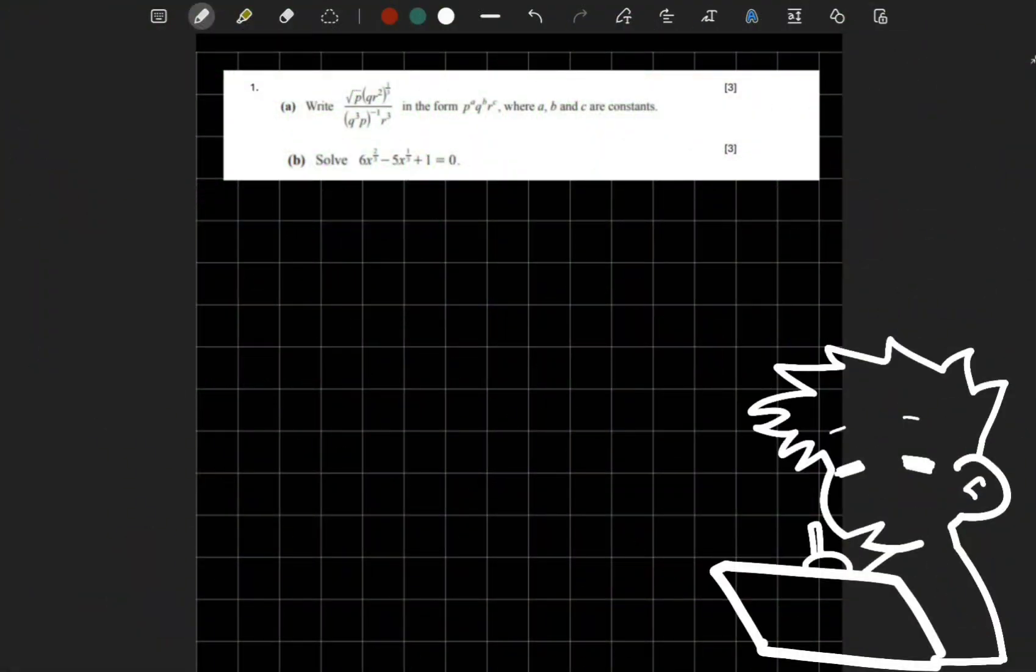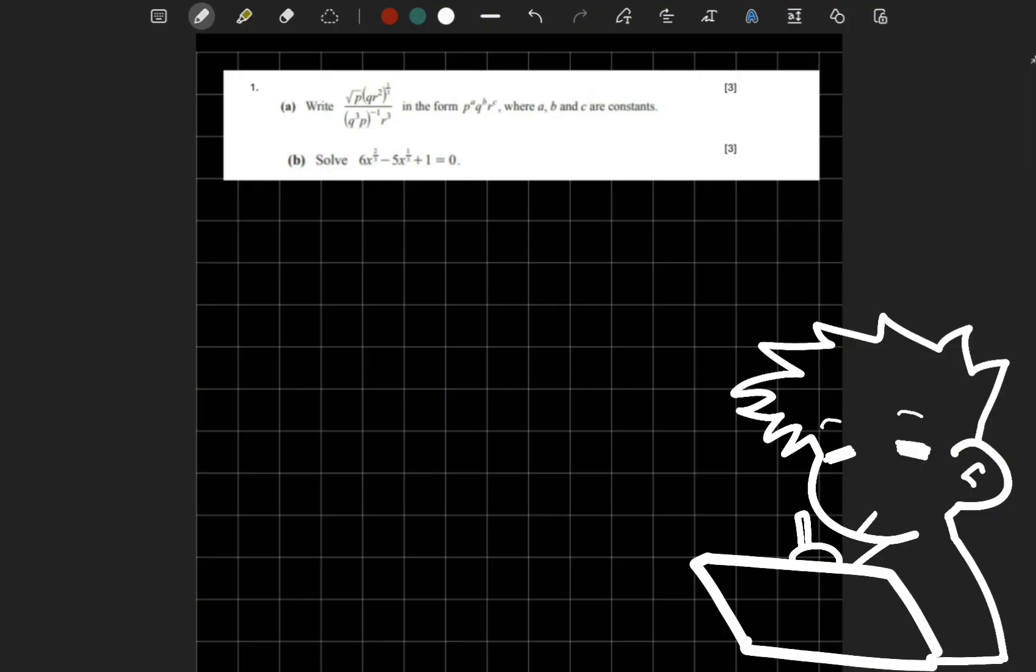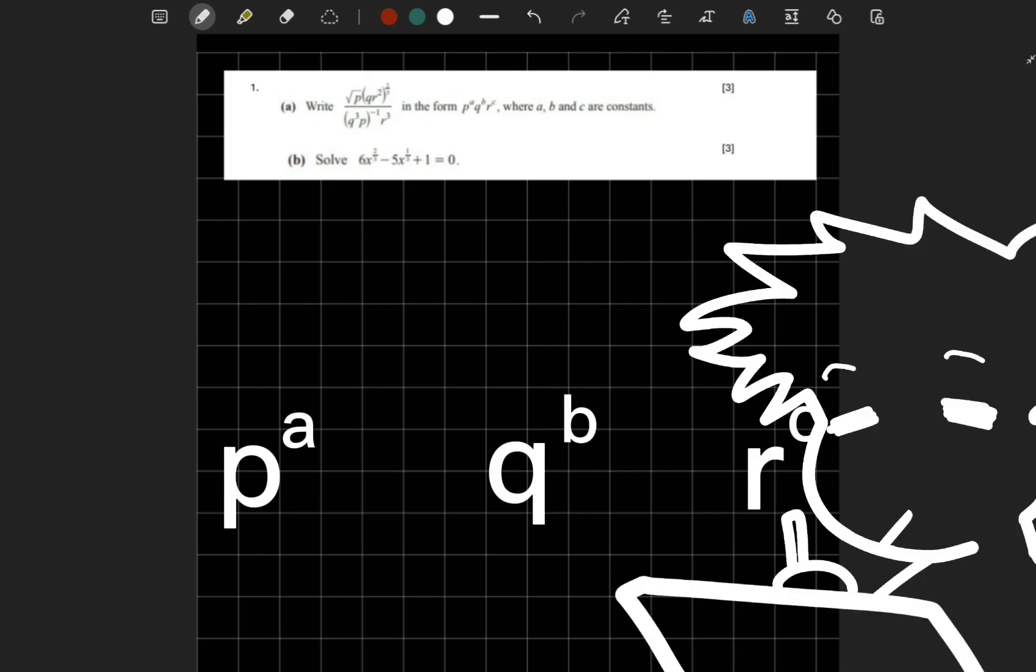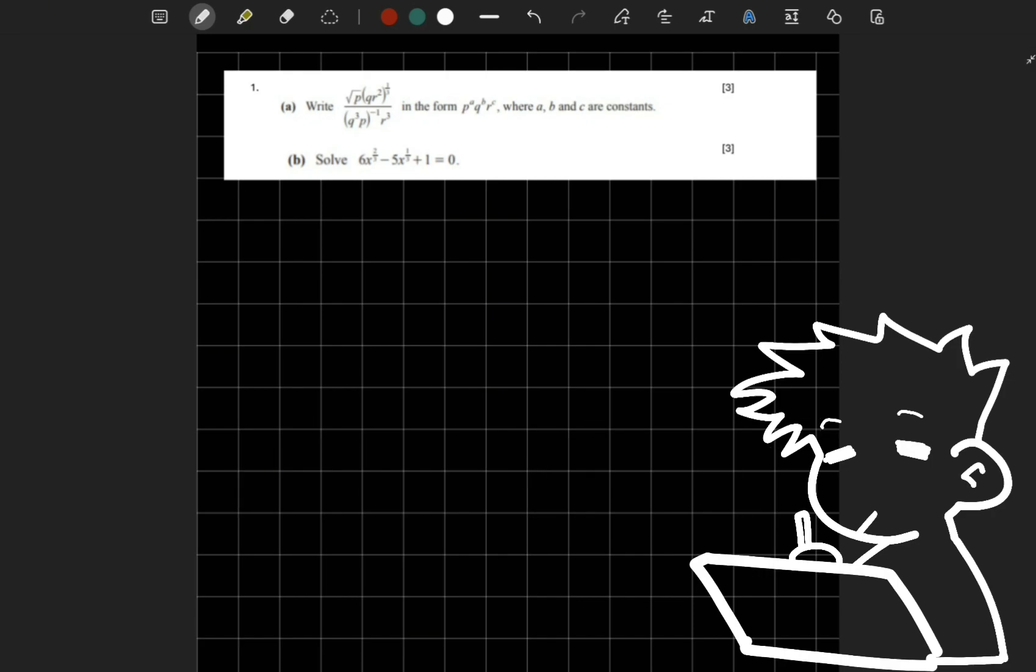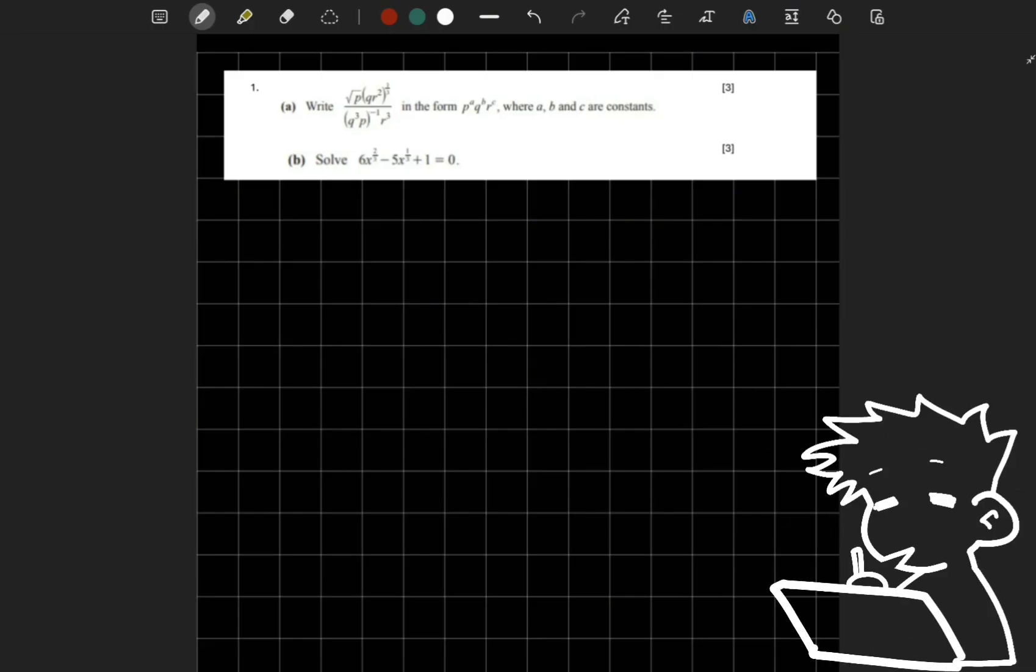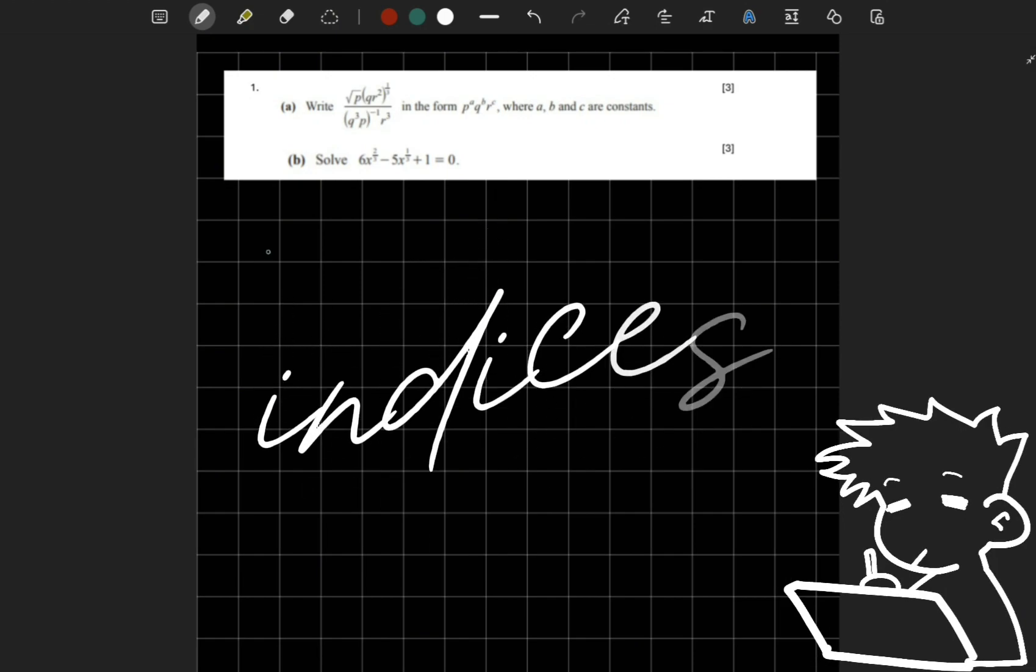I'd really appreciate it. Alright, now on to the video. Class is in session, so please focus up. We're going to go straight into it. Question number 1A: Write blah blah blah in the form of P to the power of A, Q to the power of B, R to the power of C, where A, B, and C are constants. So what topic is this? This is one of the earliest topics that you'll learn in additional mathematics, which is indices, spelled I-N-D-I-C-E-S. Alrighty then, let's just get started.